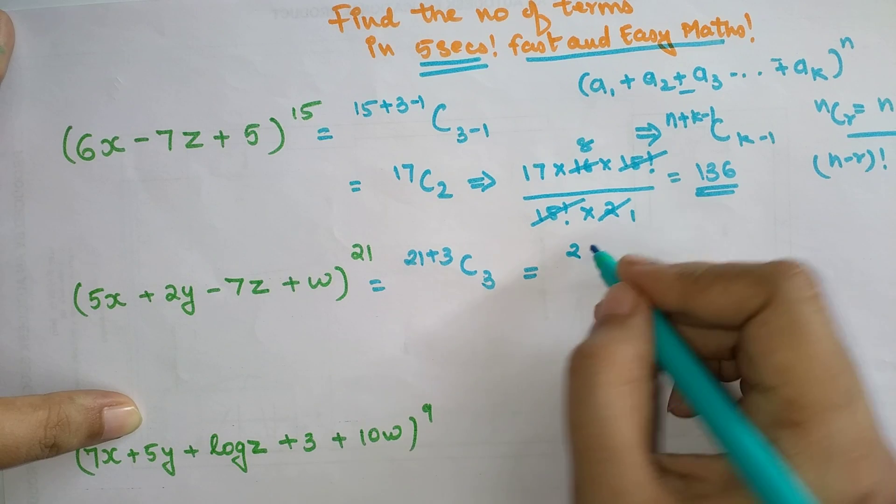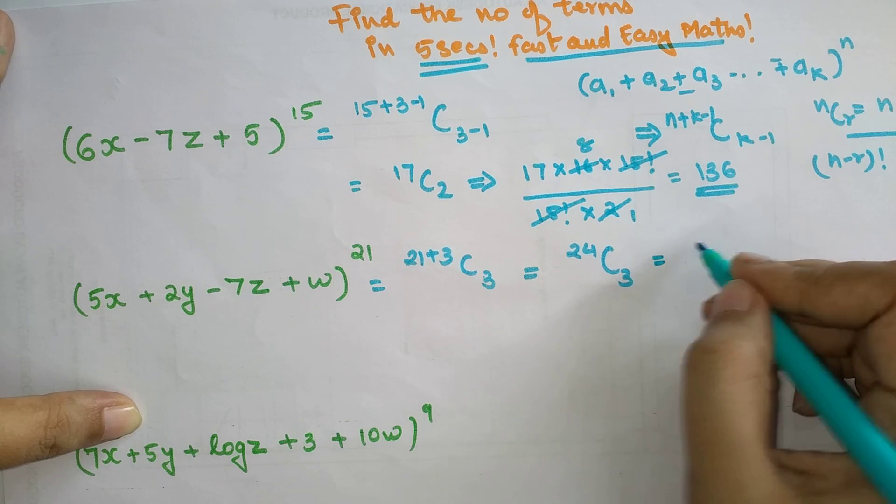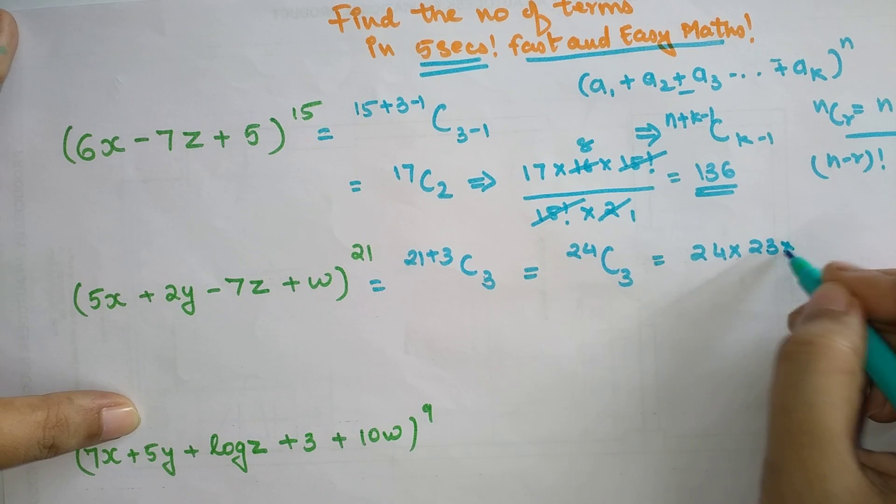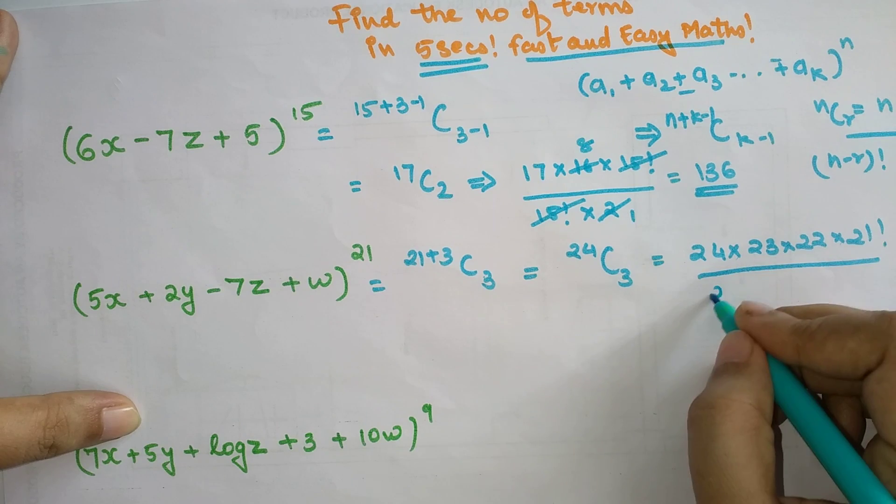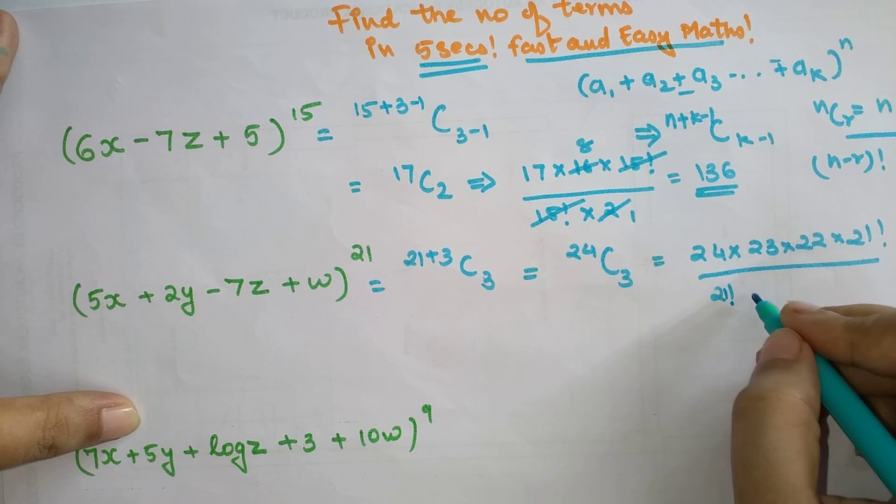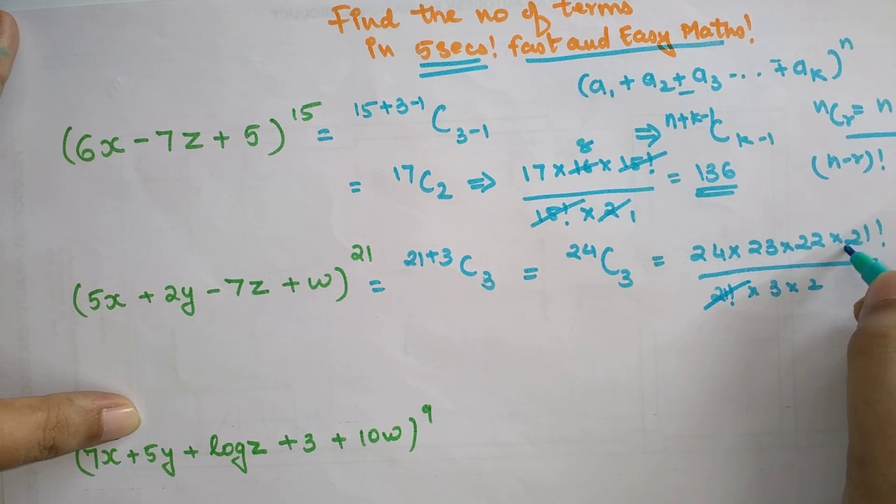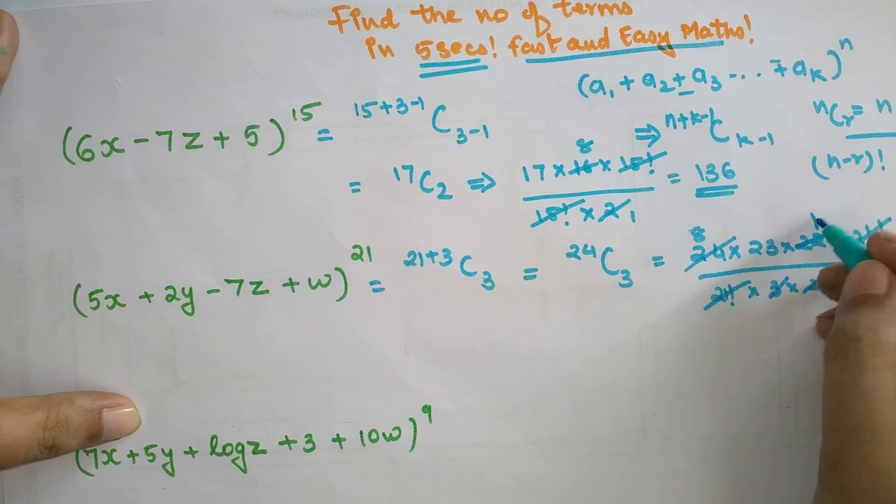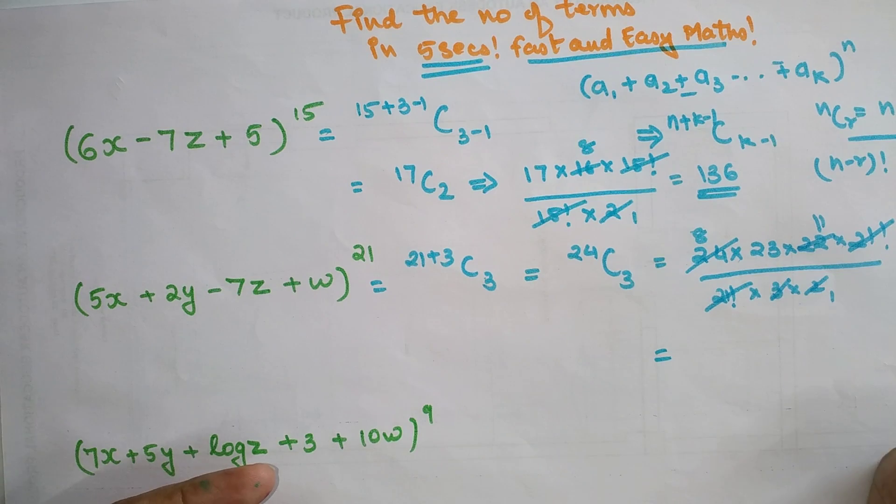So we have 24C3. I'm going to write 24×23×22×21! upon 21!×3×2. This is going to get cancelled. This is 8, this is 11. Now we just have to find out what is 88×23, and that will be our answer. My final answer is 2024.